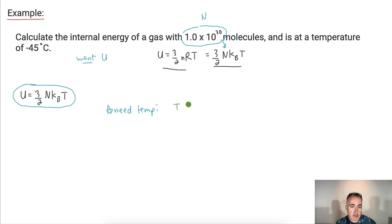Remember that the temperature in Kelvin equals the temperature in Celsius plus 273. So that means my temperature in Kelvin, which is what I need, is going to be equal to minus 45 plus 273.